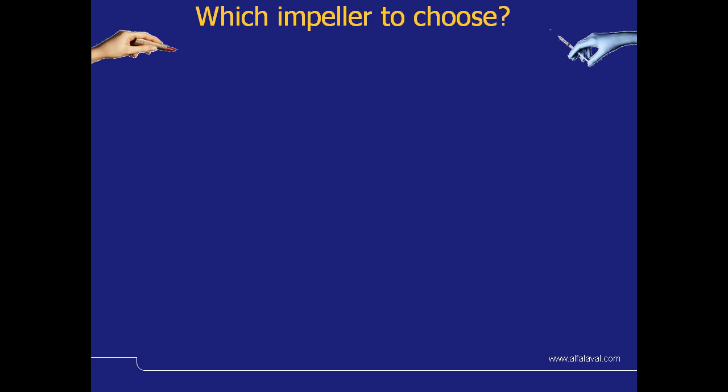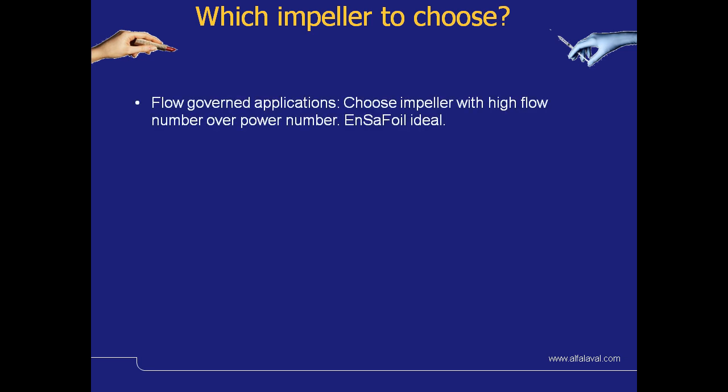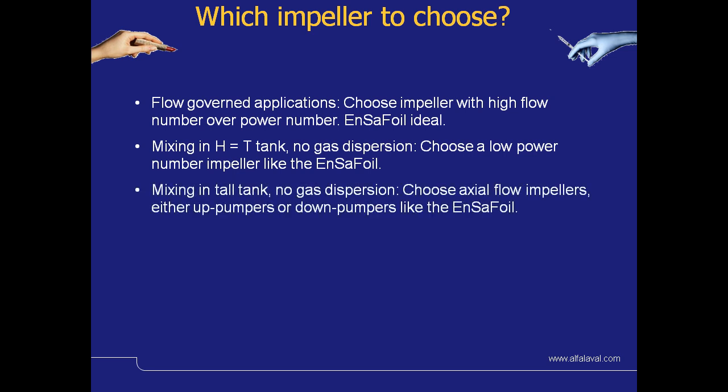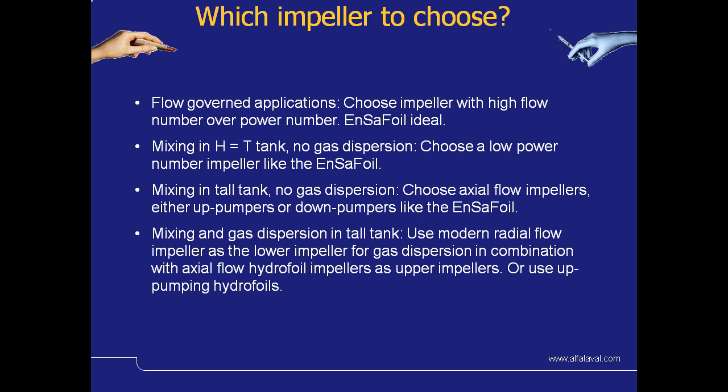So the question is, which impeller to choose? For flow governed applications, choose an impeller with a high flow number over a power number — i.e. the Ensefoil. For mixing in tanks where no gas dispersion is required, choose a low power number, again like the Ensefoil. Mixing in tall tanks with no gas dispersion, choose an axial flow impeller, either an up pumper or a down pumper, again like the Ensefoil. And for mixing with gas dispersion in a tall tank, use modern radial flow impellers as the lower impeller for gas dispersion in combination with axial flow hydrofoil impellers as upper impellers, or use an up pumping hydrofoil.